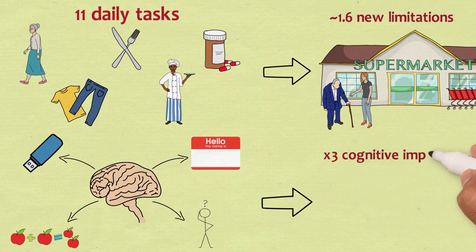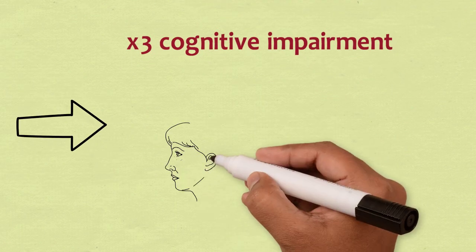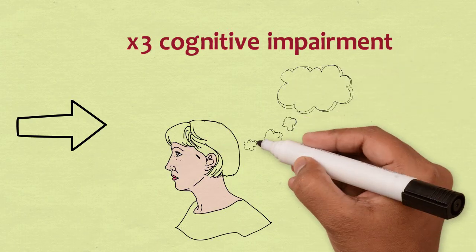Nearly 17% showed signs of moderate to severe cognitive impairment, compared with only 6% before the infection, a three-fold increase.